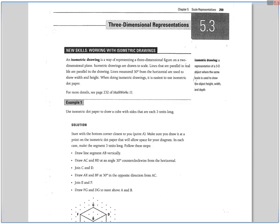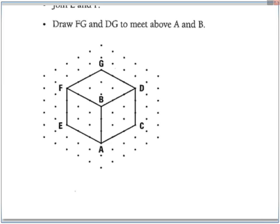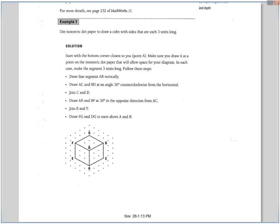So 5.3, we're going to start taking our 2D drawings into the third dimension. There are some strategies I will show you to help with that. The first one is the isometric dot diagram. An isometric drawing is just a 3D representation. You have to have this dot paper for it to occur.